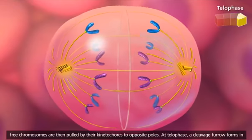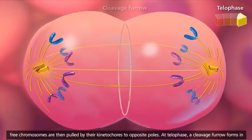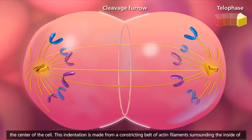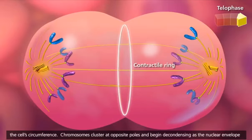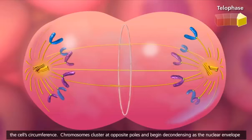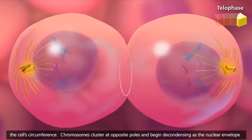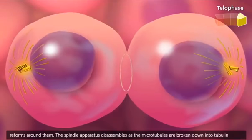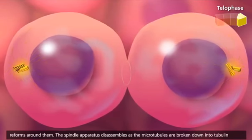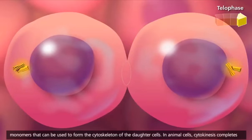At telophase, a cleavage furrow forms in the center of the cell. This indentation is made from a constricting belt of actin filaments surrounding the inside of the cell's circumference. Chromosomes cluster at opposite poles and begin decondensing as the nuclear envelope reforms around them. The spindle apparatus disassembles as the microtubules are broken down into tubulin monomers that can be used to form the cytoskeleton of the daughter cells.